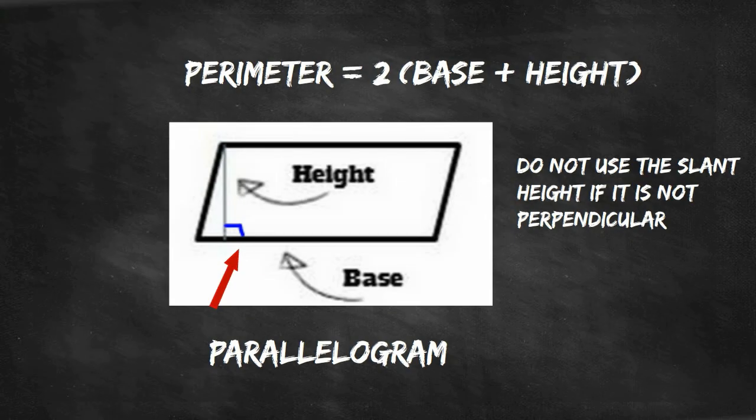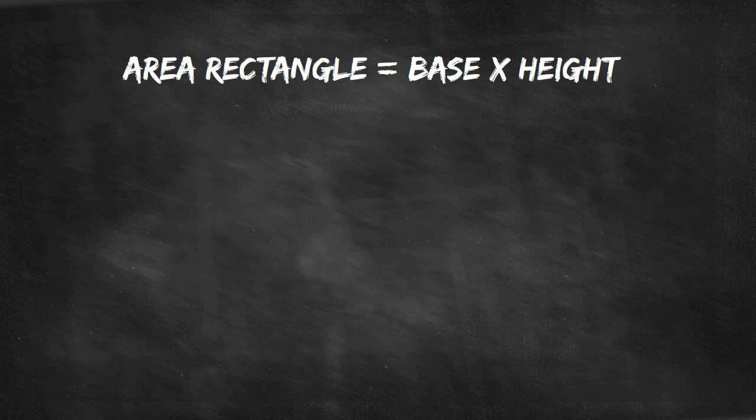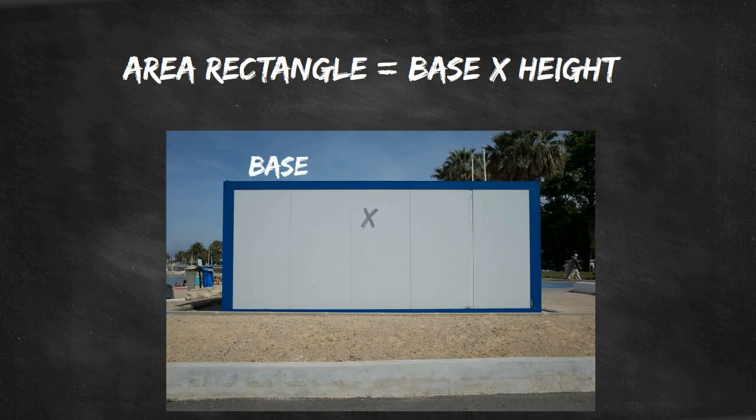The perimeter of a parallelogram is equal to 2 times base plus height. The area of a rectangle is base times height.